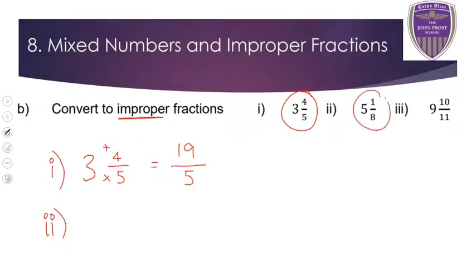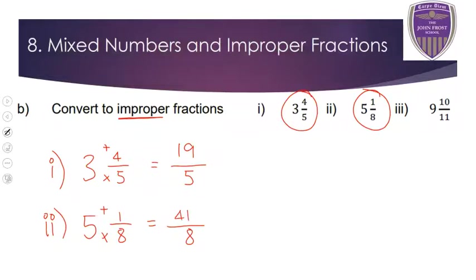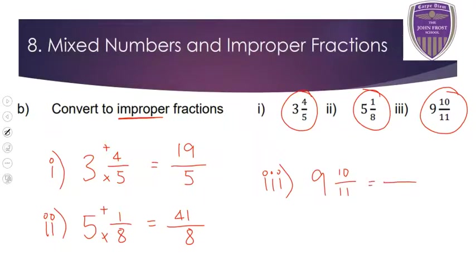For 5 and 1 over 8, the denominator is 8, and the big number 5 means we've already got 5 whole sets of 8. So 5 times 8 is 40, plus 1 more gives 41. Answer is 41 over 8. For 9 and 10 over 11, the denominator stays as 11. The big number 9 means we've got 9 whole sets of 11, then we add an extra 10. So 9 times 11 is 99, plus 10 is 109. Answer is 109 over 11.